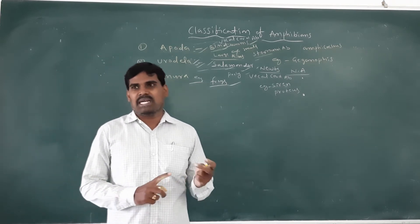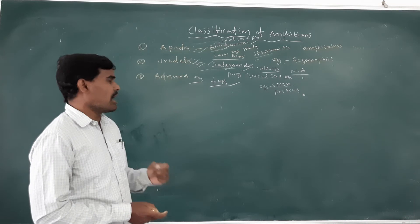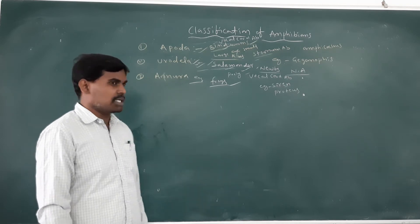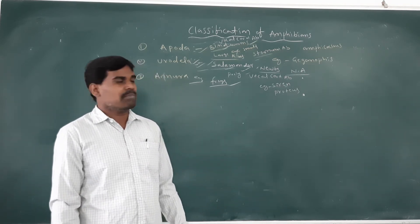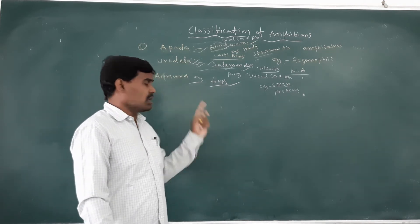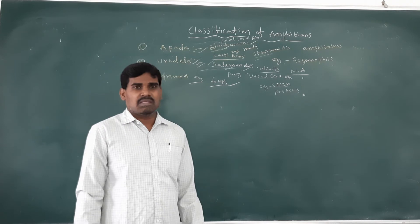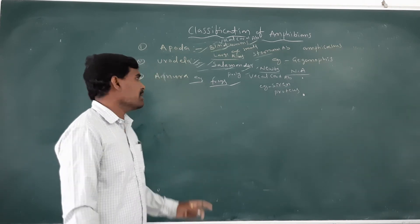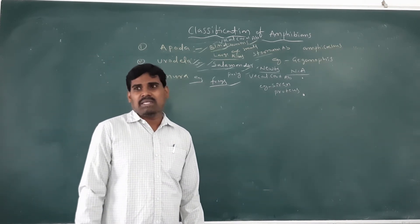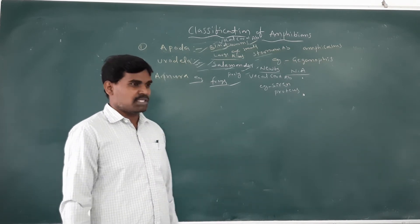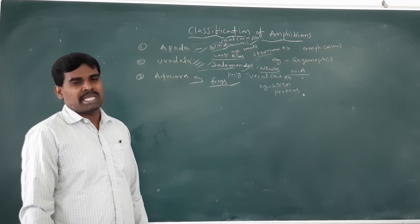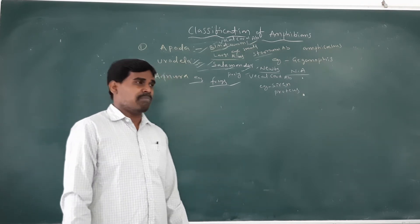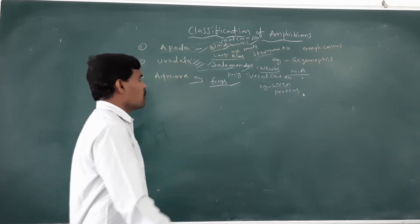The fore limbs are shorter than the hind limbs. Hind limbs are bigger than the fore limbs. The skin is dry or moist. Moist skin is used for skin respiration. The feet are webbed — they help in swimming. The vocal cord is present, used for sound producing.